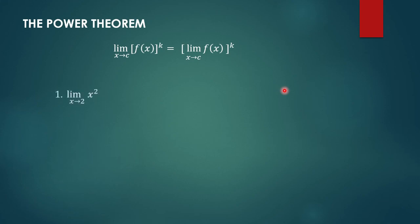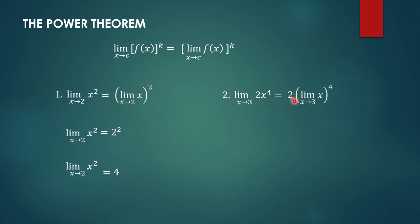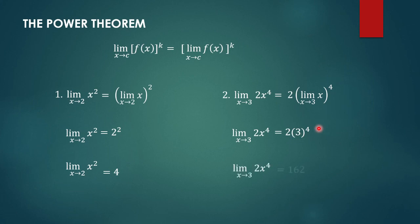For the Power Theorem, let's say we have the limit of x squared as x approaches 2. We can write this as the squared quantity of the limit of x as x approaches 2. The limit of x as x approaches 2 is 2, and squaring it gives 4. Another example: the limit of 2x raised to the 4th power as x approaches 3. Using the Constant Multiple Theorem, this is 2 times the 4th power of the limit of x as x approaches 3, which is 3 raised to 4, that is 81, times 2, giving us 162.